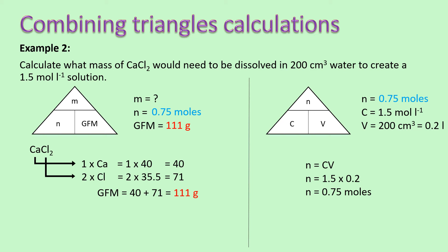We can replace the question mark with our number of moles of 0.75. Our final step is to calculate what we're asked to — the question asks us to calculate the mass of calcium chloride. We now have a number of moles and a GFM, so: mass equals N times GFM, which is 0.75 times 111. Our mass will be 83.25 grams. If you'd like to pause here, you can copy this example down.